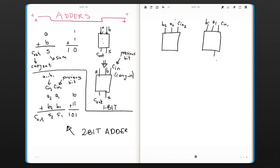And the outputs would be S1, C out one, and this would be S2, C out two.